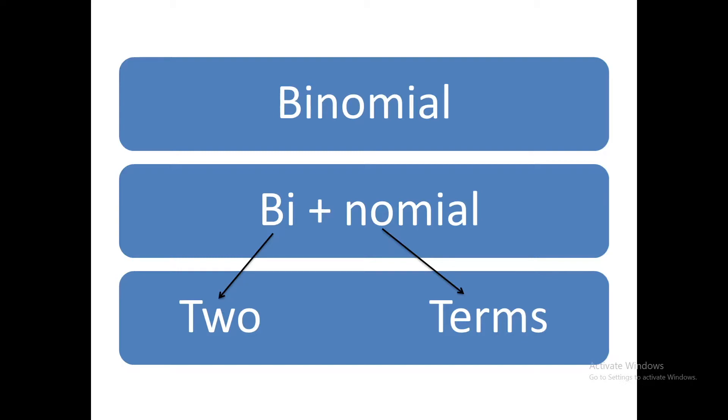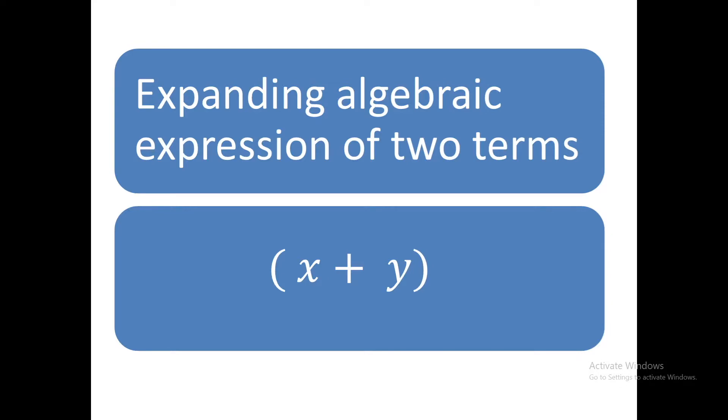So in mathematics, binomial means an algebraic expression of the sum of two terms. We are expanding algebraic expressions of two terms for the exponents one, two, three, and four.